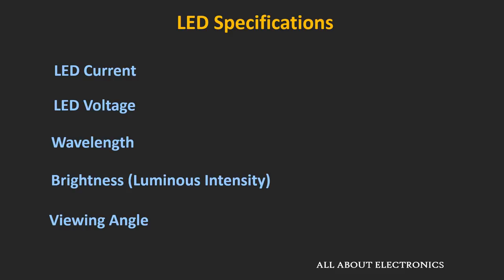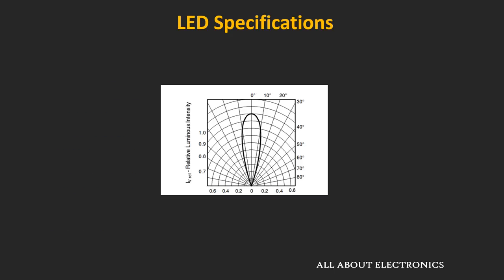The other specification which you will often find in the datasheet is the viewing angle. So basically it defines the directivity of the LED. And if you see the datasheet of any LED, then you will find a polar radiation pattern for the LED. Basically it defines the angle from the maximum intensity where the intensity drops to 50%. So for the given graph, the intensity is maximum at the center, and as we move away from the center, the intensity starts dropping in either direction. At this point the intensity drops to 50%, so for this LED the viewing angle will be equal to roughly 15 degrees.